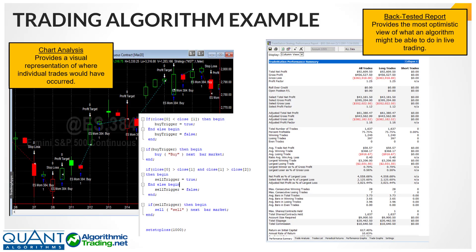For those not familiar with the concept of a trading algorithm, I wanted to show a chart to give an example of a basic algorithm. Just so you know, the code on the screen does not correlate to the algo you see on it, nor does the strategy report. I'm really just showing it so you can conceptually see what I mean by a trading algorithm. In essence, a trading algorithm is a step-by-step set of instructions.